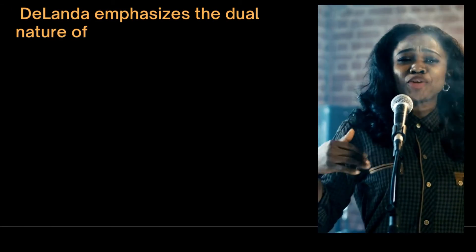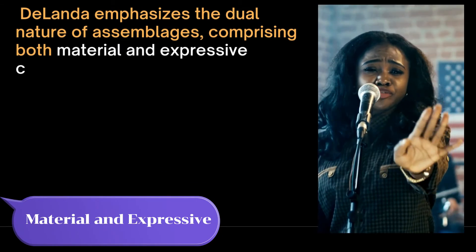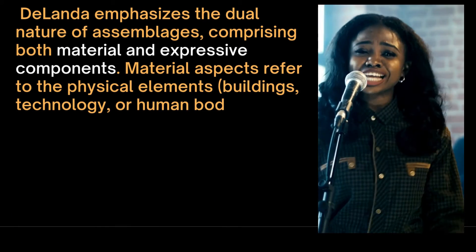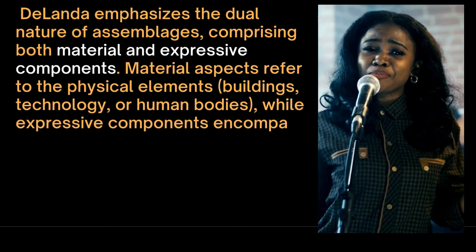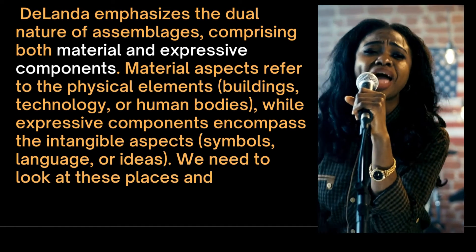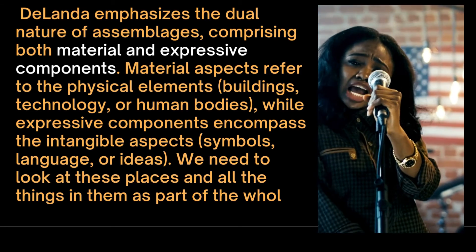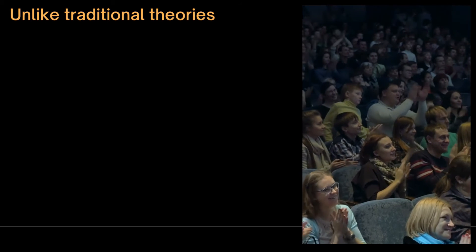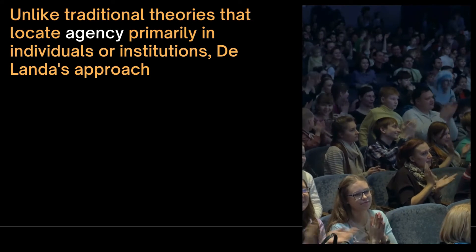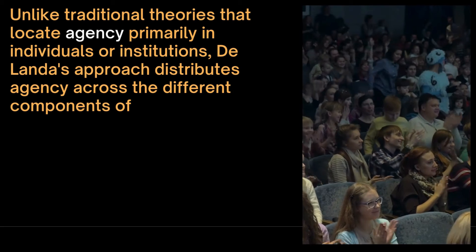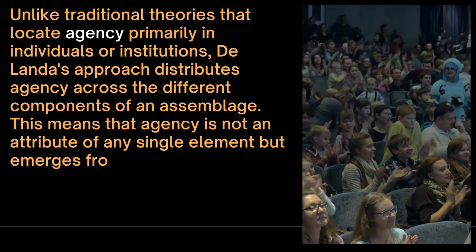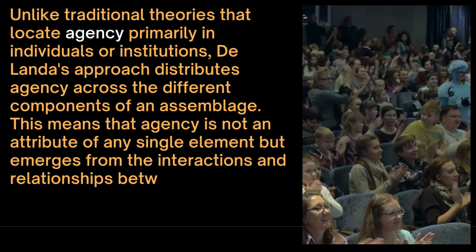Assemblages comprise both material and expressive components. Material aspects refer to physical elements — buildings, technology, or human bodies — while expressive components encompass intangible aspects such as symbols, language, or ideas. We need to look at these places and all the things in them as part of the whole picture. Unlike traditional theories that locate agency primarily in individuals or institutions, DeLanda's approach distributes agency across the different components of an assemblage. This means agency is not an attribute of any single element but emerges from the interactions and relationships between various parts of the assemblage. The agency in an assemblage arises from synergies.